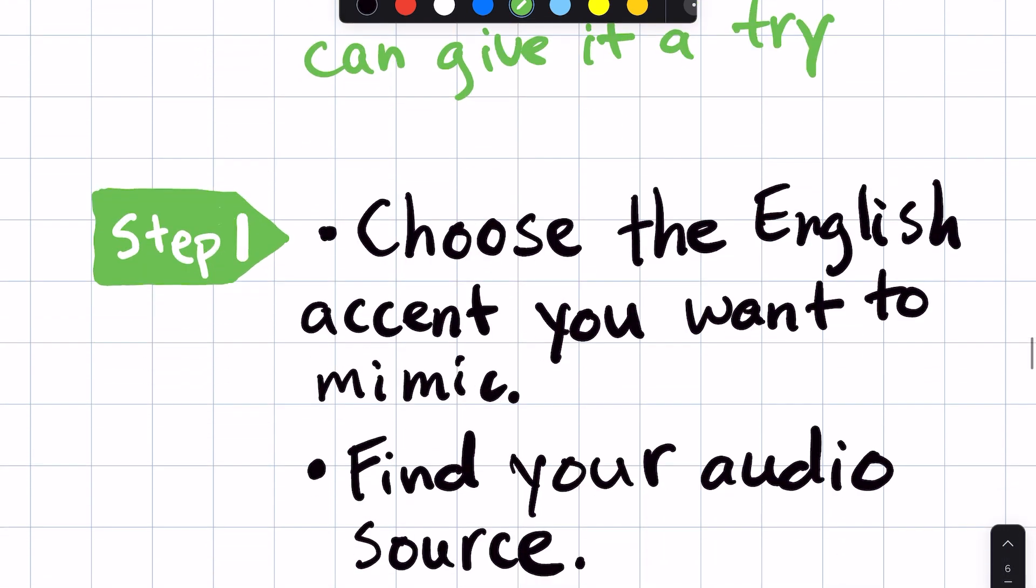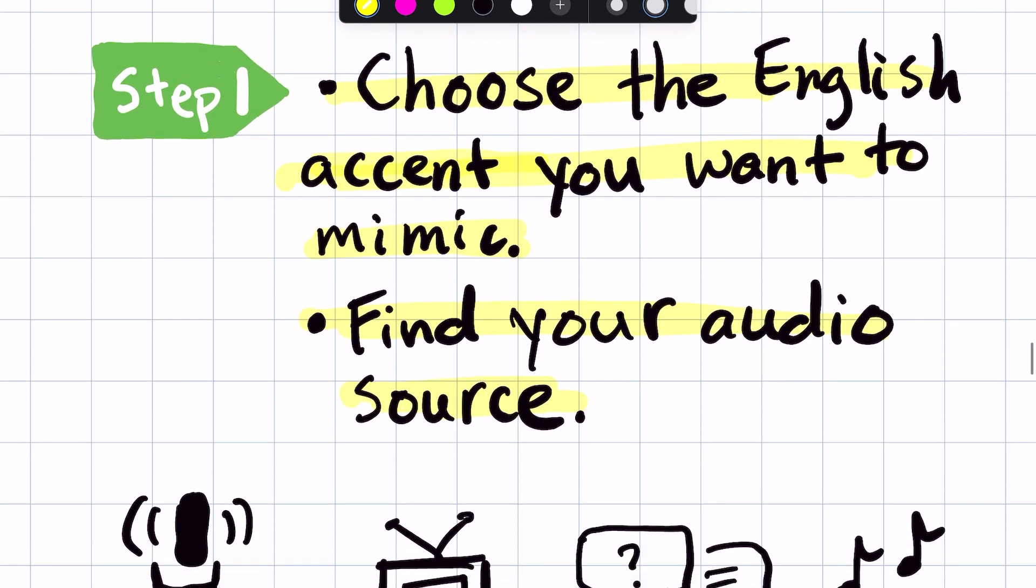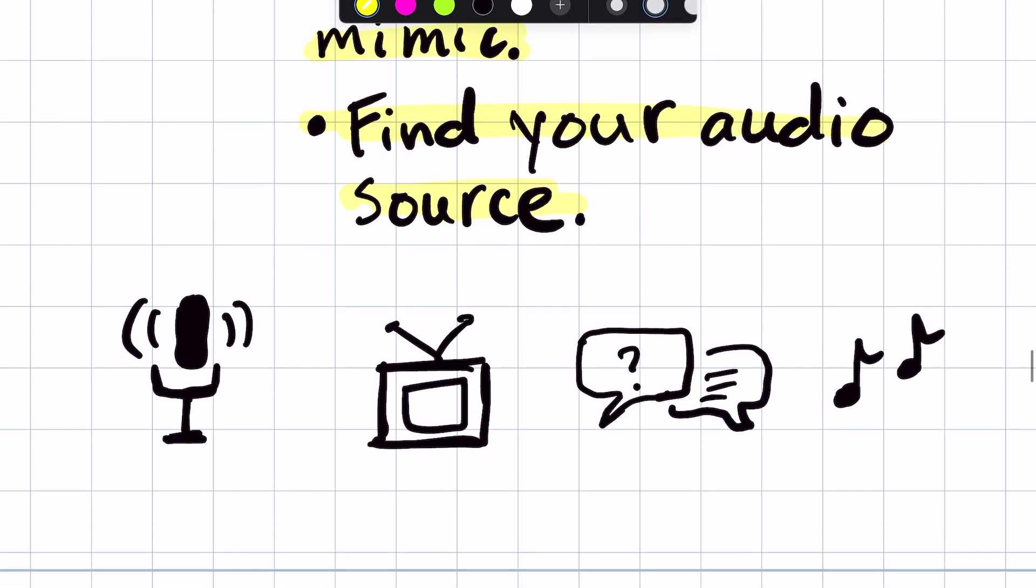And so step one, the first thing you want to do is choose the English accent you want to mimic. And then you want to find your audio source. Now, there are many ways to find audio sources. You just have to find the one that is most comfortable for you.